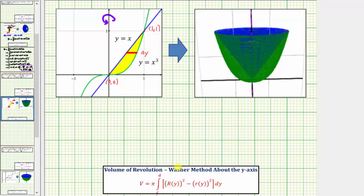Big R(y) is the outer radius, which is the distance from the y-axis to the corresponding point on y equals x cubed — so big R(y) would be this distance. The inner radius is the distance from the y-axis to the corresponding point on the blue graph y equals x, so this would be little r(y). Because big R(y) is the distance to the function y equals x cubed, we need to express the outer radius as a function of y, so we need to solve this equation for x.